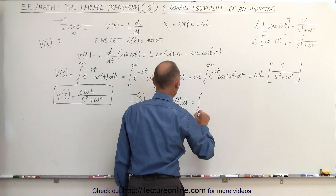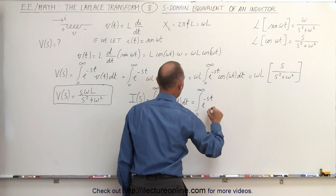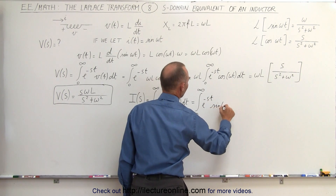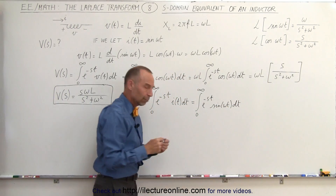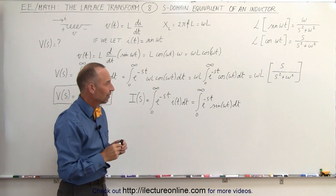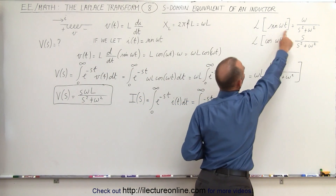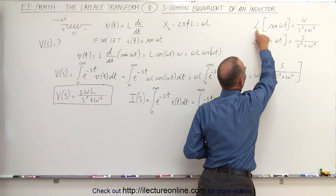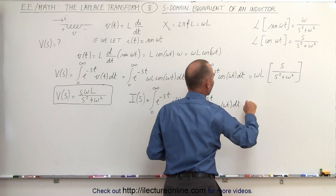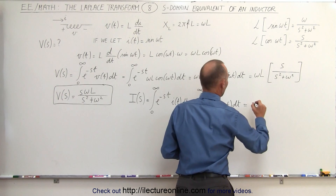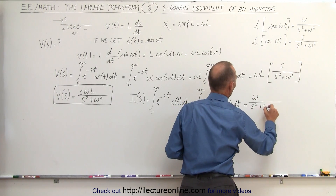So this can be written as the integral from zero to infinity of e^(−st) times sin(ωt) dt. We've done that integral before in the previous video. The Laplace transform of sin(ωt) is equal to ω divided by S² plus ω².